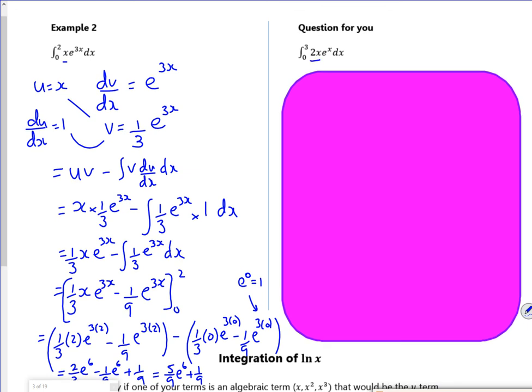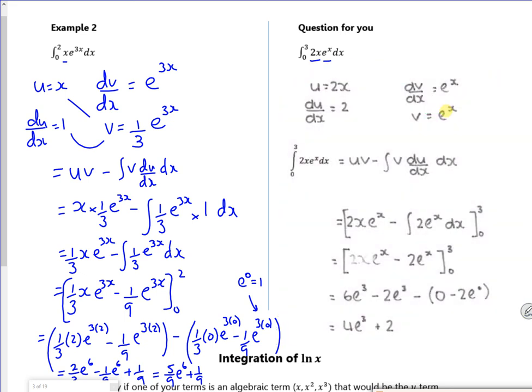So u is 2x, dv dx is e to the x. Now I don't put the limits in until here. Until I've finished the integration there. So I don't bother with the limits. Until I've done it. I think it just over-complicates it. I'm going to limit it. So it's a uv minus a dv dx. So it's a minus a. Nicely perfect, yeah.